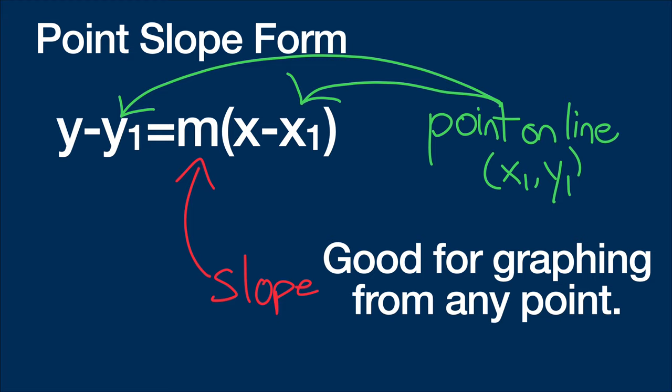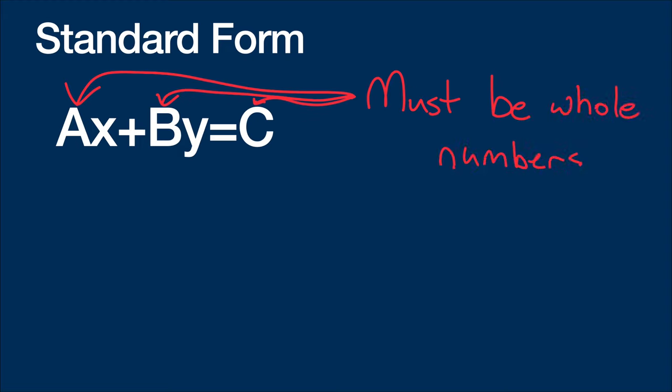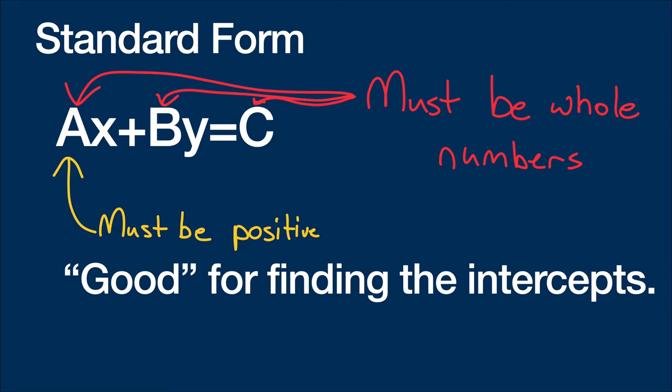So now let's talk about the last form, which is standard form. Standard form, or as I call it the worst form, is ax plus by equals c. A couple important pieces of information: these three must all be whole numbers, no decimals. Also a has to be positive or else it is not standard form. Now even though I have very little to say that is positive about standard form, I will say it is good for finding the intercepts.